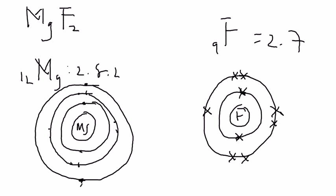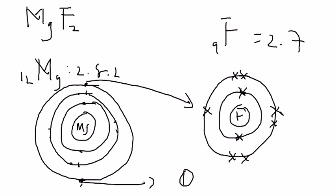Each fluoride atom can only receive one electron from magnesium. However, magnesium has two electrons to donate, so you need two fluoride atoms — one to receive each electron from magnesium.